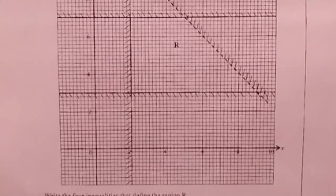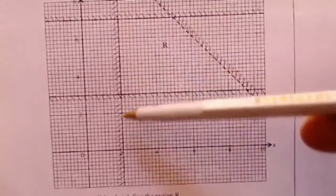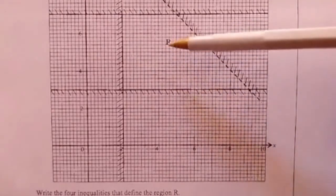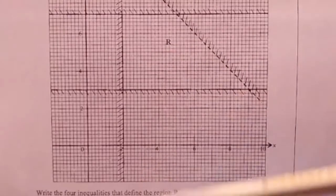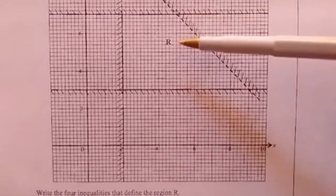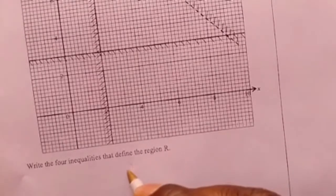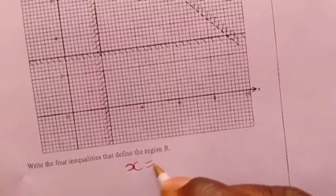The next stage is to remove the equal sign and replace it with the inequality sign that supports the position of R. If we look at this vertical line, you can notice that R is appearing on the right side. If the line is vertical, the right side is the greater side. So the first thing to do is to write the equation of the line.